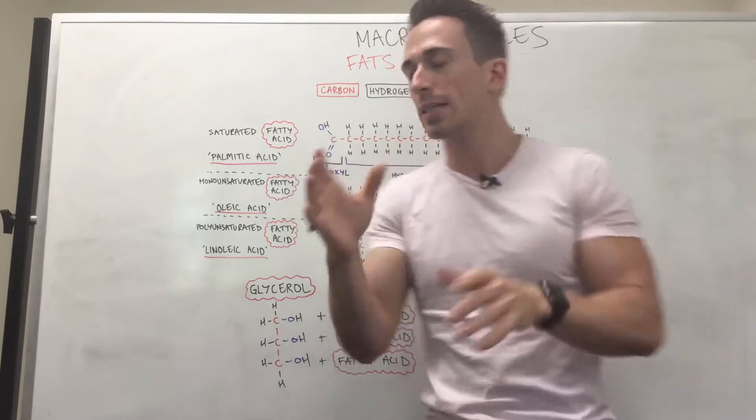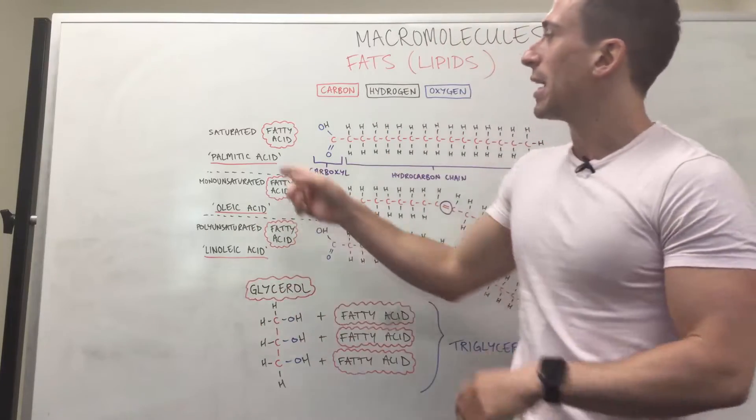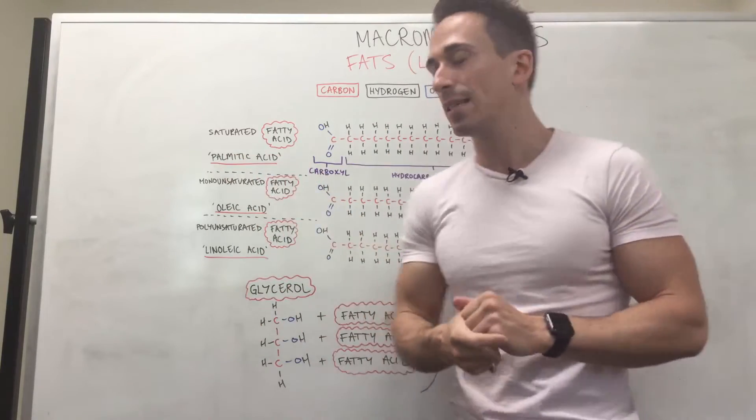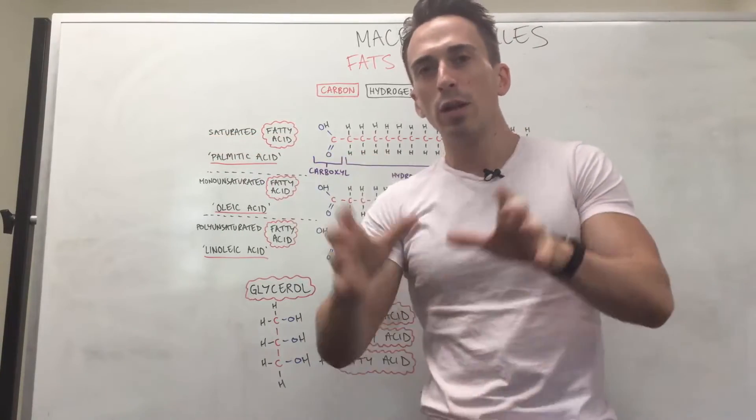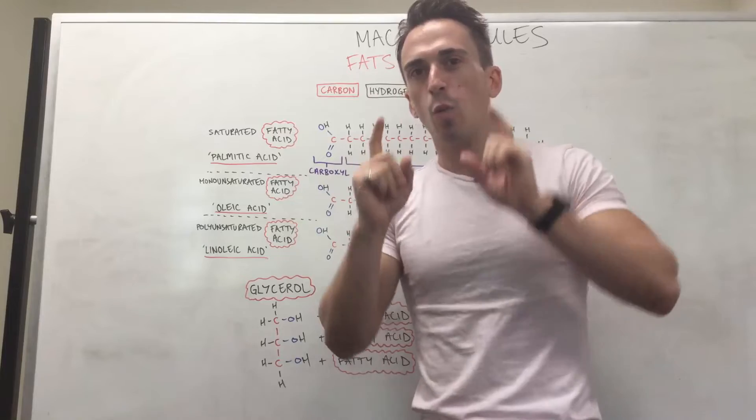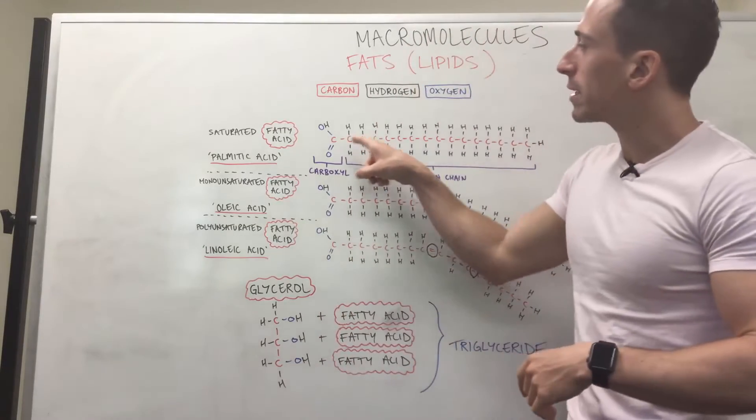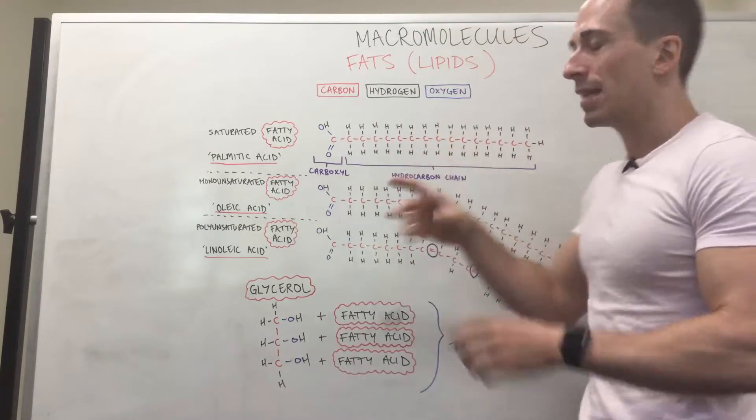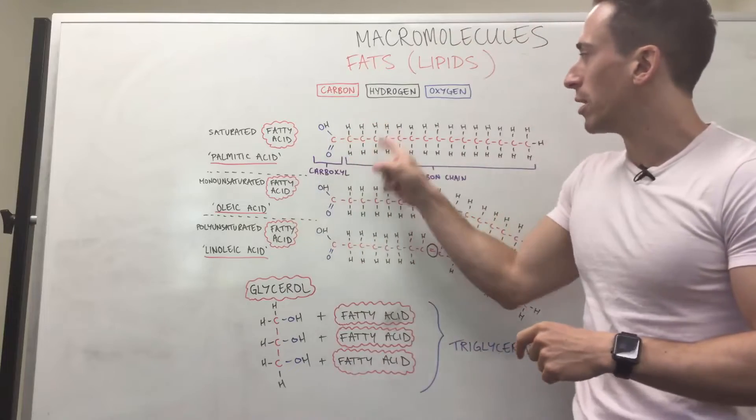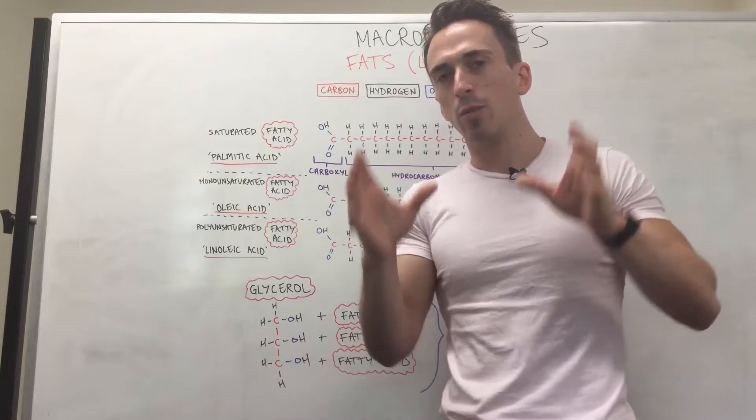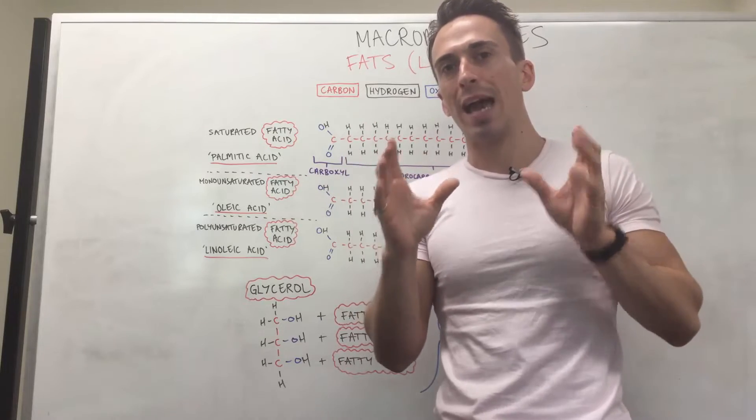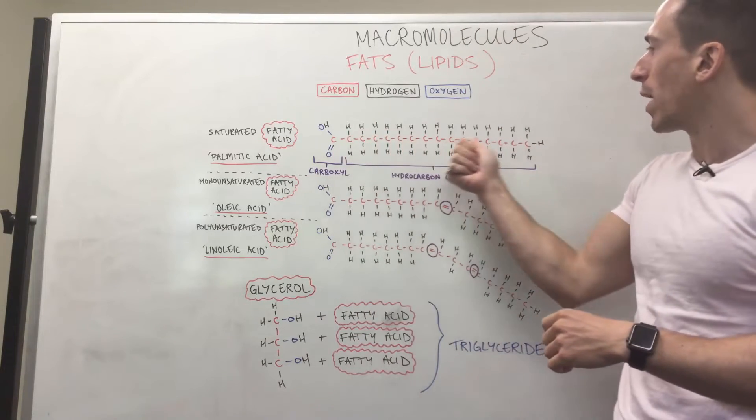Now what you can see is these three different fatty acids. The first one I've drawn up is what's called palmitic acid, and it's what we call a saturated fatty acid. Now when you've got a saturated fatty acid, what it means is this: every single carbon is attached to a hydrogen atom. That means all the possible bonds that a carbon can make are going to be filled up by hydrogen atoms. And you can see that all the way across.